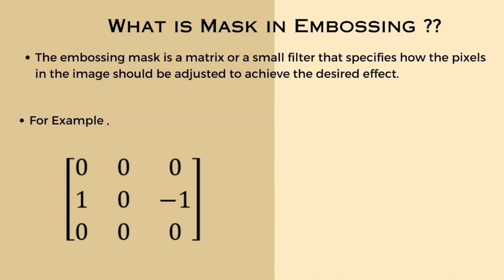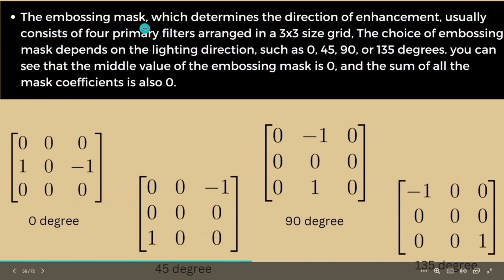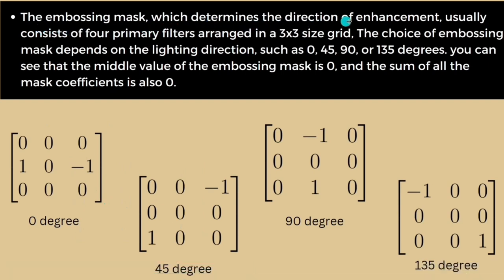The embossing mask is a matrix or a small filter that specifies how the pixels in the image should be adjusted to achieve the desired effect. The embossing mask, which determines the direction of enhancement, usually consists of four primary filters arranged in a 3x3 size grid.